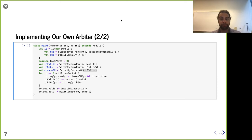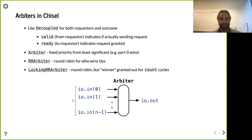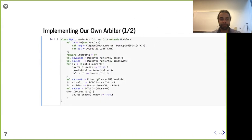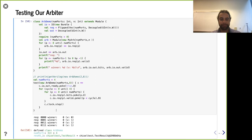So we've built our own arbiter — that was an exercise, since Chisel has wonderful ones waiting for you in the library. If we test out our own arbiter with the same kind of demos as before, we can see the lowest one always wins, or if we want to give a chance to higher ones, we can do that too.